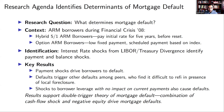For option ARM borrowers, we're going to use the same LIBOR-Treasury divergence, but that's going to impact balances. The key results are that payment shocks do tend to result in borrowers defaulting — not surprising that borrowers facing cash constraints are defaulting. We also find that defaults are triggering defaults among peers, who are facing refinancing difficulties in the presence of local foreclosures. Even shocks to borrower leverage that don't impact current payments also cause defaults. Overall, the picture is a double trigger theory of mortgage default.